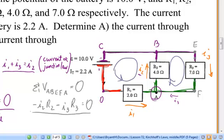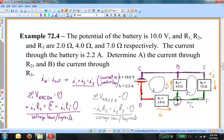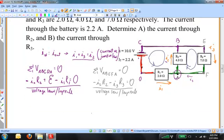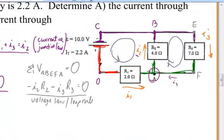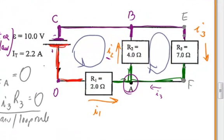There is a second application of the voltage law, or the loop rule. Now, what am I trying to find? I'm trying to find I2 and I3. I've got three equations and two unknowns. For instance, they tell me the current through the battery is 2.2 amperes — that also has to be the current I1. So I know a number for I1, and I've got three equations and two unknowns.